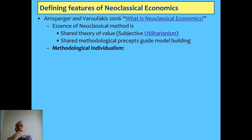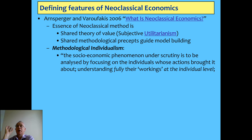Varoufakis and Arnsberger wrote a nice paper about what is neoclassical economics, identifying the defining features of it. They all start from the idea of methodological individualism — you start from the individual level and work up. You can find Krugman saying exactly the same thing. Varoufakis and Arnsberger see it as a poor idea. They start from the individual and work out: what is the behavior of the individual, what are the constraints, what are the motivations, and then have them optimizing. That's the basic starting point.